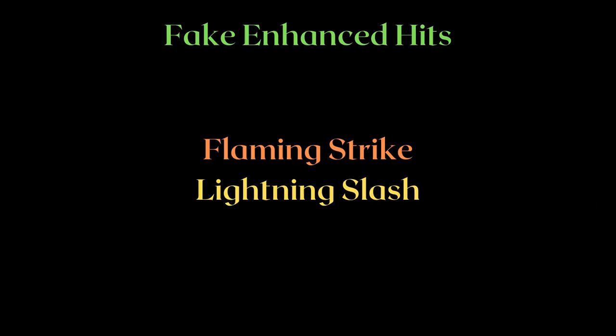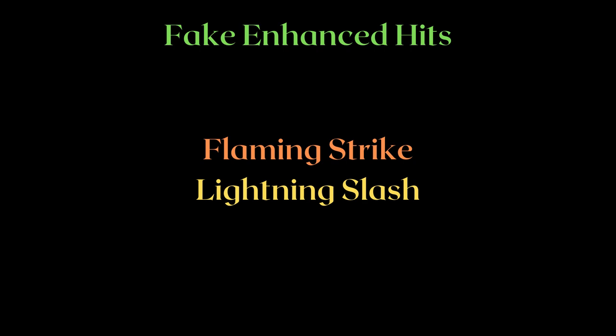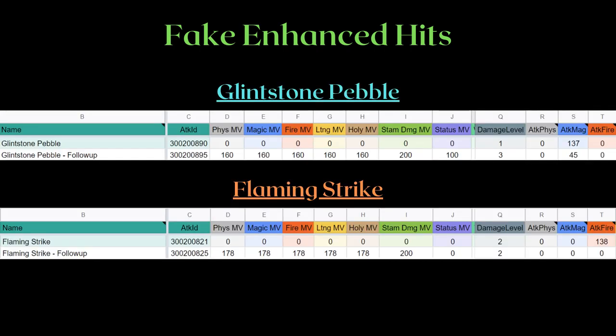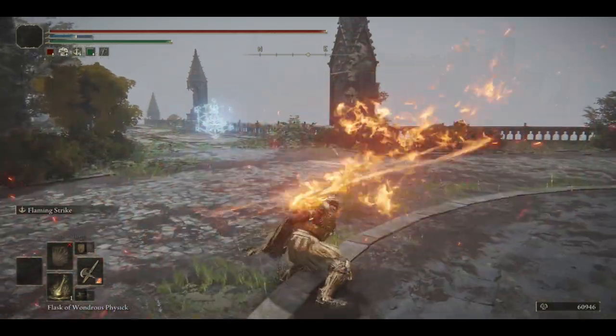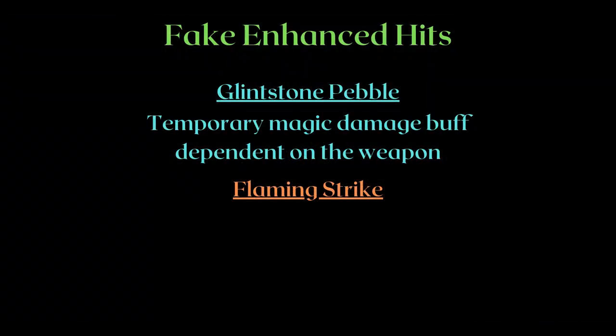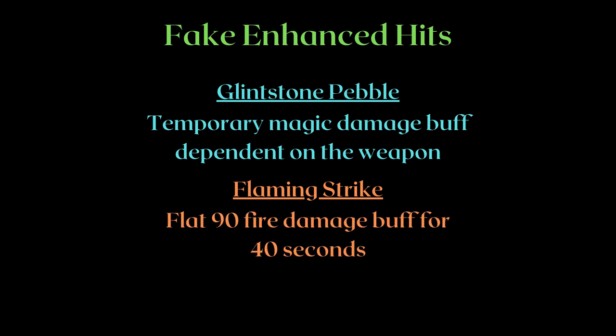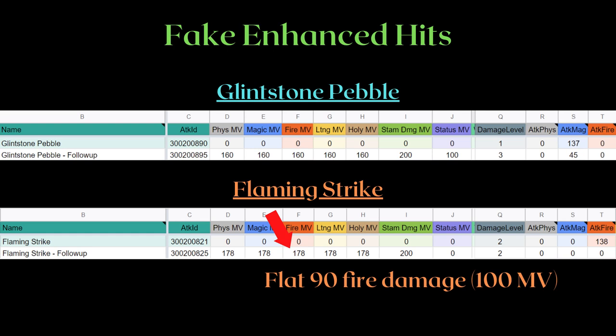Before we move on to bullet arts, let's quickly take a breather with the much simpler fake enhanced hits. Two examples are Flaming Strike and Lightning Slash. While you do swing a buffed weapon around, the buff is not temporary enough as it doesn't only last for the duration of the attack — these are fake enhanced hits. Unlike Glintstone Pebble's followup, you will not find any MVs for the fire attack bullet art section of the followup Flaming Strike attack. Yet there is still a buff on the followup attack. Glintstone Pebble has a temporary magic buff dependent on the weapon you're using, while Flaming Strike and other fake enhanced hits have a constant buff value regardless of the weapon. In Flaming Strike's case, your weapon gains 90 flat fire damage for 40 seconds. This flat fire damage buff uses a flat 100 MV for the followup attack, meaning a raw 90 fire damage bonus that doesn't scale. Much simpler than enhanced hits.